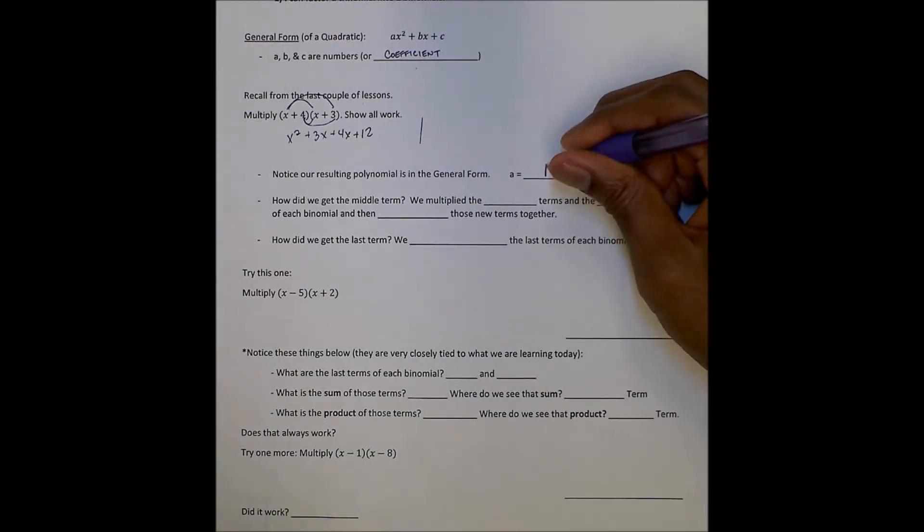The point of this is being able to identify where these numbers come from, and then being able to identify A, B, and C. A is the number in front of X squared — X squared is not part of A. The number in front of X squared is 1. The number in front of X is B, and that number is 7. The number by itself with no variable is C, and in this case that number is 12.